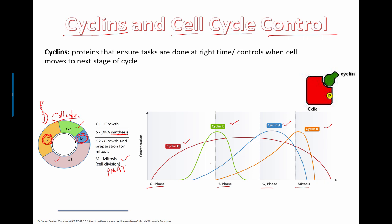So cyclins are proteins and most things that do anything in the cell are actually proteins. And these proteins are coded for by genes in the actual DNA itself. So all the instructions are actually in the DNA. Remember that. Proteins that ensure that tasks are done at the right time and controls when the cell moves to the next stage of the cycle. And these could play a big role in cancer or cancer prevention in the future as well too.